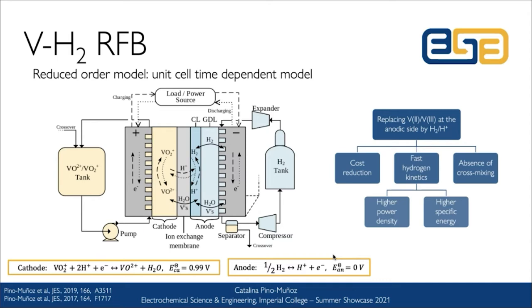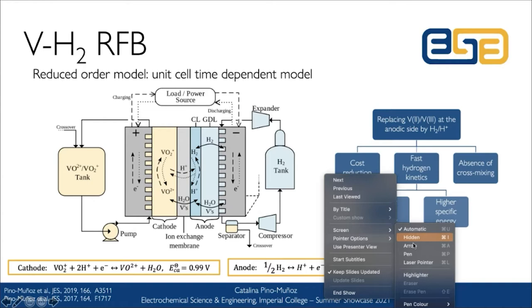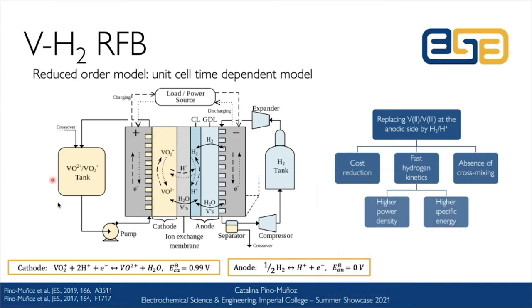I'll start with the reduced-order model, which was developed for a vanadium-hydrogen system. This system is similar to the one that Ben introduced. It has on the positive side a vanadium-based electrolyte — a couple combining vanadium-4 and vanadium-5 — and on the negative side, hydrogen.